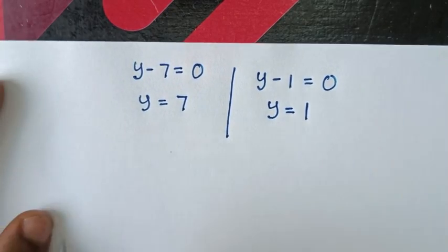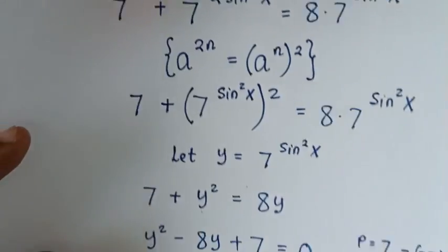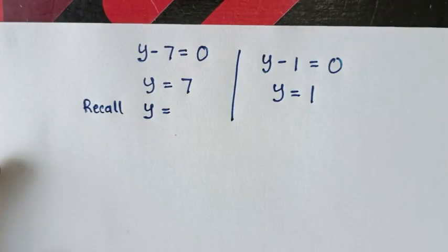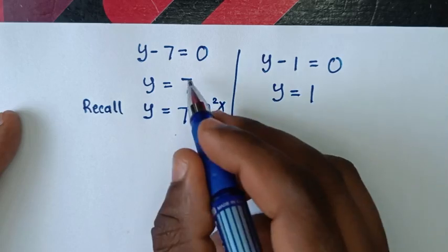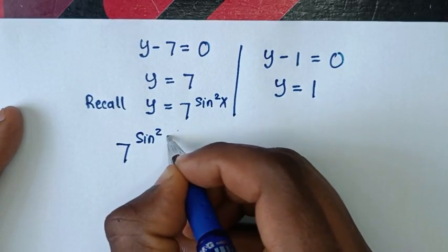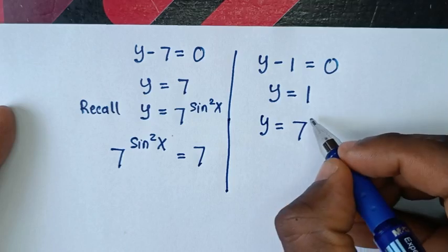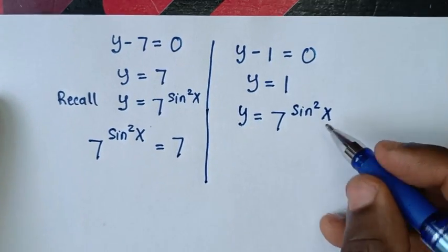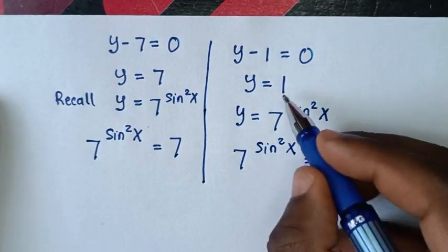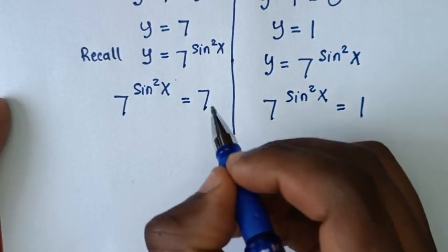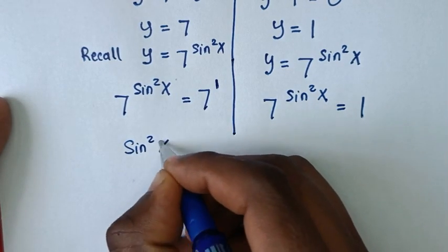We recall that we let y = 7^(sin²x). Comparing y = 7 with 7^(sin²x): we have 7^(sin²x) = 7, and since 7 = 7^1, comparing powers with the same base gives sin²x = 1. Comparing y = 1 with 7^(sin²x): we have 7^(sin²x) = 1 = 7^0, so sin²x = 0.